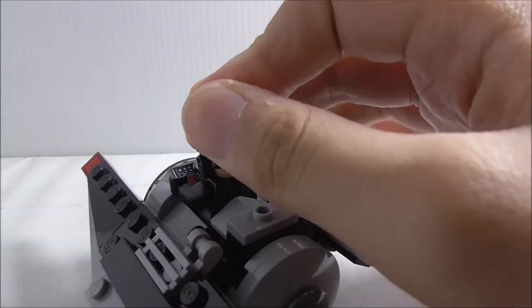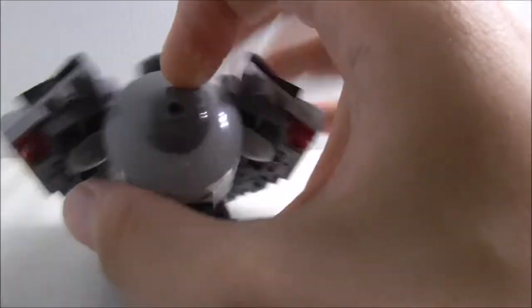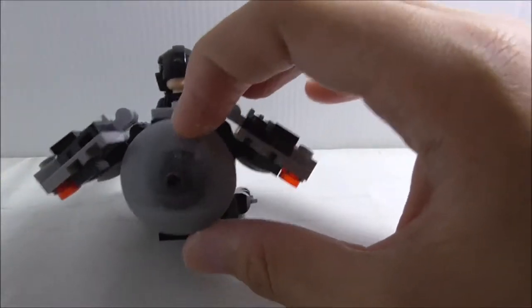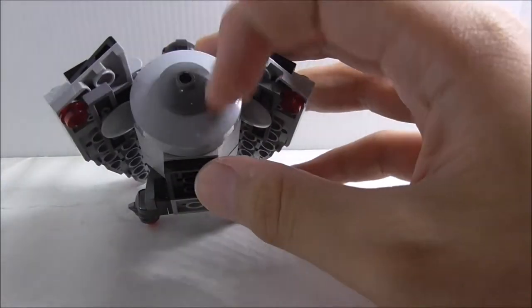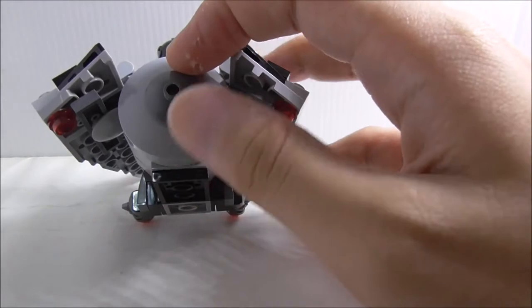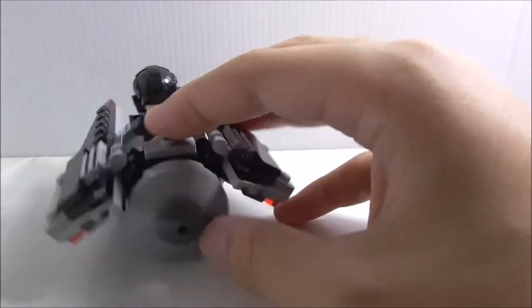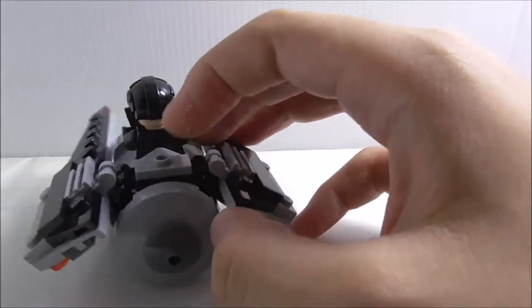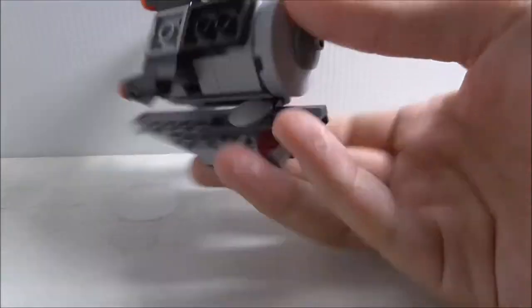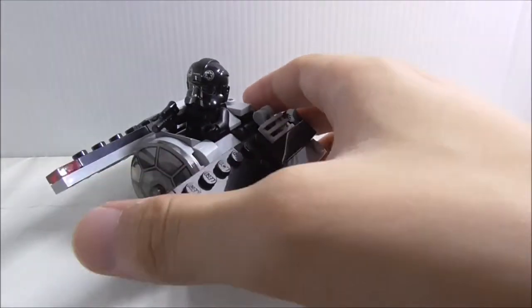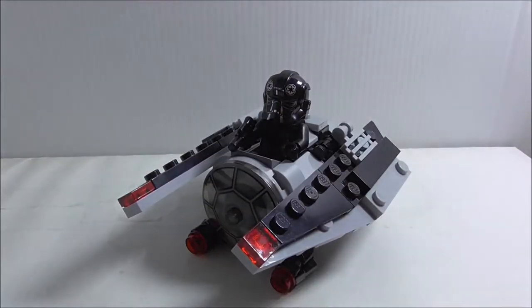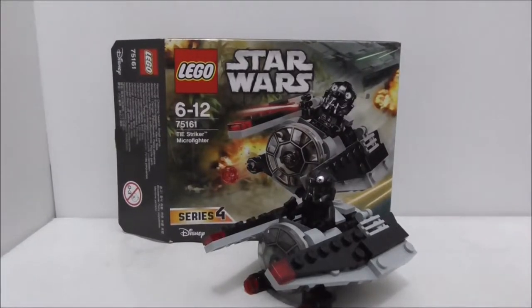The back has no detailing or anything but it's pretty accurate to the big ship. You have all these round pieces but aside from that, that's really it for the TIE Striker.